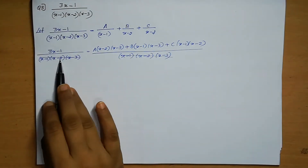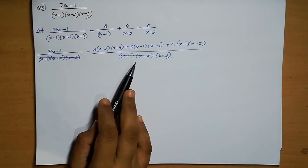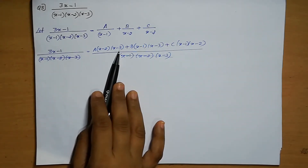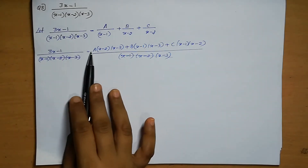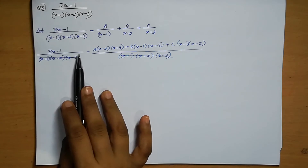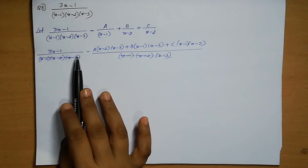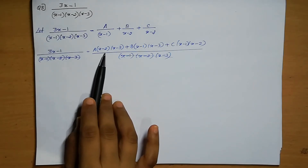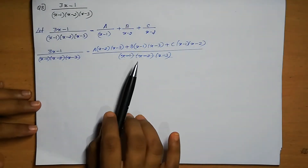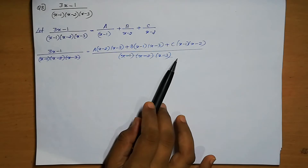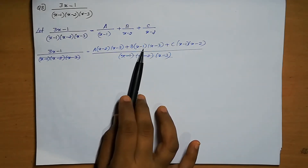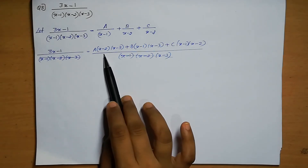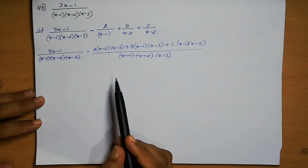So, 3x minus 1 equals A(x minus 2)(x minus 3) plus B(x minus 1)(x minus 3) plus C(x minus 1)(x minus 2). If we open the brackets, x² terms appear, making it very lengthy to solve three simultaneous equations. Instead, we substitute specific values to eliminate terms and find A, B, C easily.